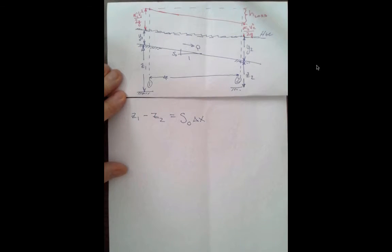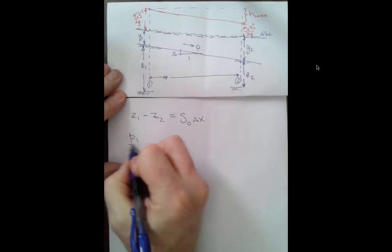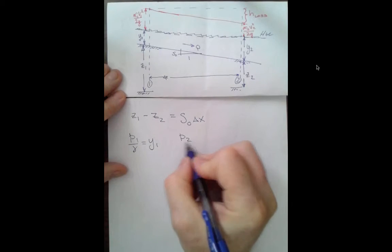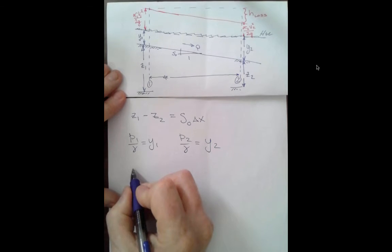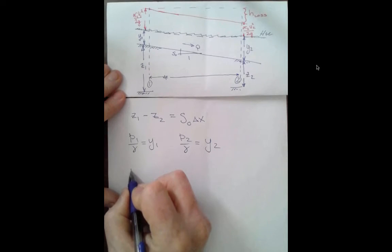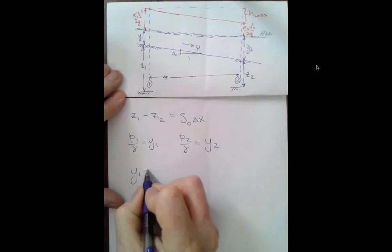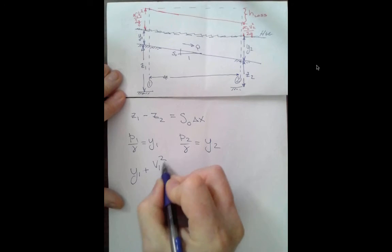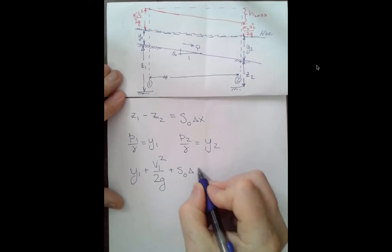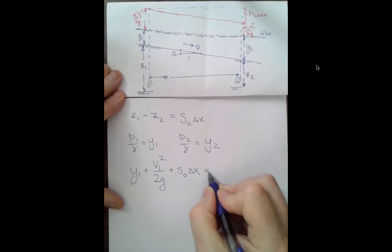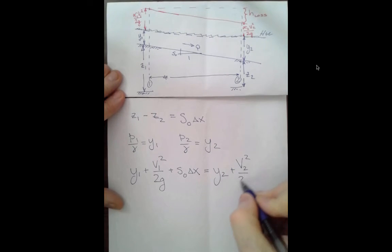So we'll make that replacement in a second. P1 over gamma is Y1, P2 over gamma is Y2. So our modified Bernoulli equation now becomes Y1 plus V1 squared over 2g plus S0 delta x equals Y2 plus V2 squared over 2g plus the head loss.